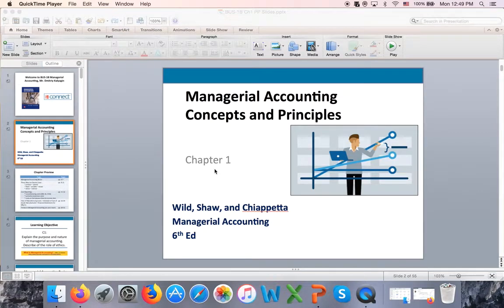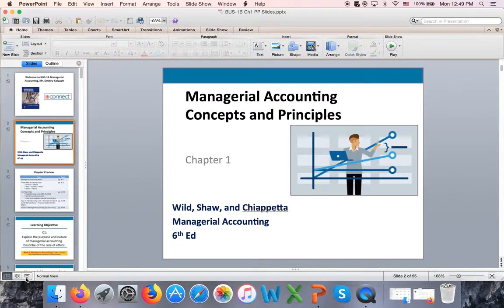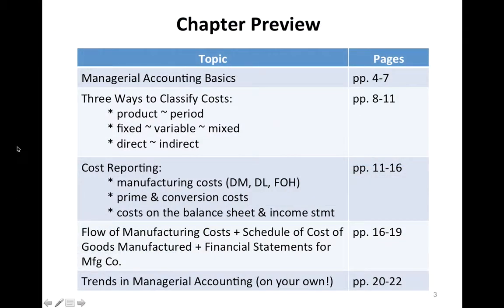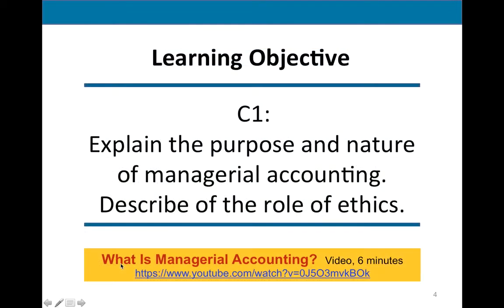Hello, welcome to managerial accounting. This is chapter one. This chapter has two distinct subtopics, so I will record two parts. The first part will cover the concept of costs and their classifications. In the second part we will talk about cost reporting — the schedule of cost of goods manufactured, or COGM — and how it flows into the financial statements for a manufacturing company. So let's get started.